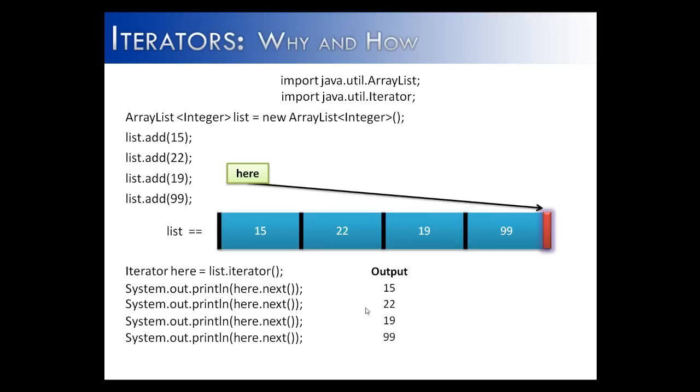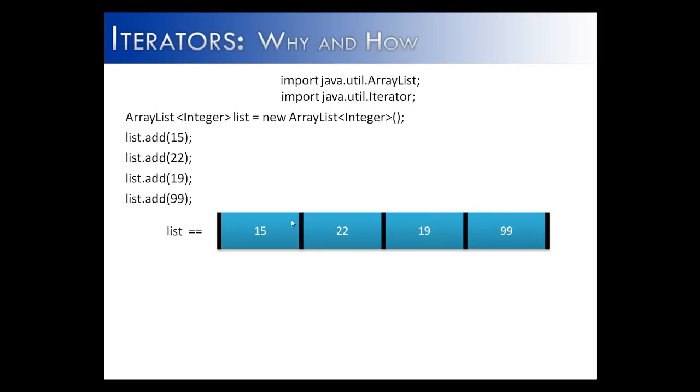Next will do 19, and then next will do 99. For this slide, what we're going to show you is we created our iterator here. We're going to iterate it once. Notice we didn't do system out print line, so it's not going to output anything.